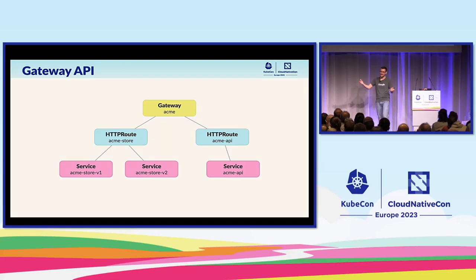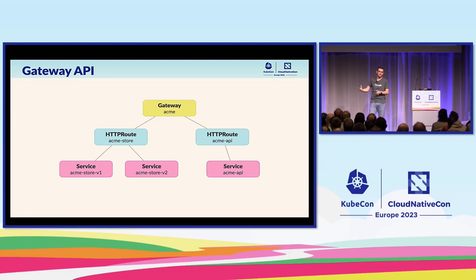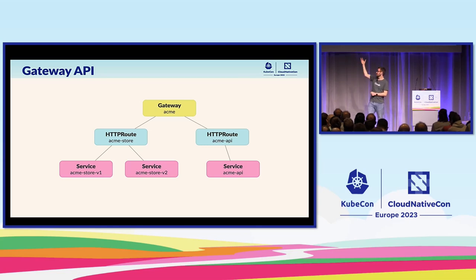There's a lot of talks at KubeCon about Gateway API so I'm not going to go into lots of details here. Understand that a Gateway, when we're talking about cloud providers, largely represents a cloud load balancer. Routing would be your routing configuration — we have HTTP route and a bunch of other protocols represented with different route types. The service is just the group of endpoints that you want to route to. In this case, we have a route for Acme Store doing some traffic splitting between Store v1 and Store v2 — a pretty straightforward Gateway API example.